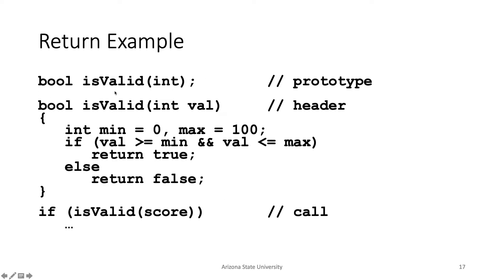Try to assign the result to a variable or print it if the function returns something. For example, instead of putting all validation logic in main, you can hoist it to a function whose purpose is just to check if a value is valid. Here we return a true/false value — if the value is within the desired range, return true; otherwise, return false. Then in main, we call the function and figure out if the input is valid. This makes main much clearer to understand.